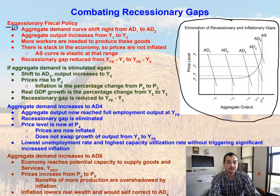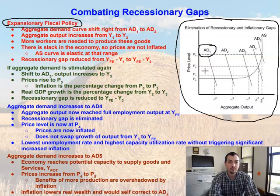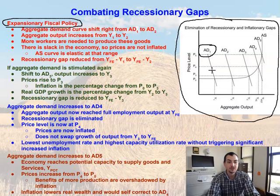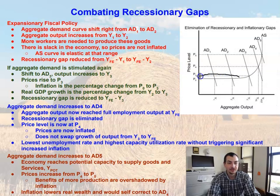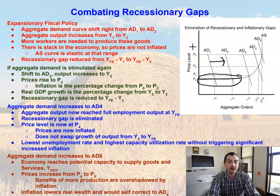Whenever we employ expansionary fiscal policy, what we're trying to do is shift that aggregate demand curve to the right. So let's say we're over here at AD1 and we employ expansionary fiscal policy — we're trying to spur on the economy by reducing taxes or increasing government spending. That shifts aggregate demand to the right, moving from AD1 to AD2. Output increases from Y1 to Y2. Because we're in the flat part of the aggregate supply curve, the AS curve is elastic at this range, and prices stay the same — we're still at price P0.